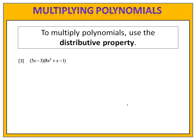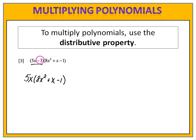In exercise 3, we have a binomial 5x minus 3 times a trinomial 8x squared plus x minus 1. The process is identical. We'll begin by distributing the 5x, then we'll take a look at the next term, which is minus 3, and we'll distribute that. Then we can do the math.